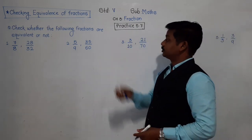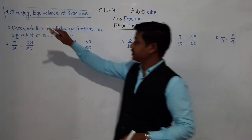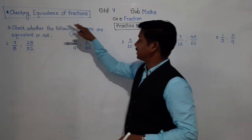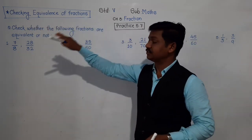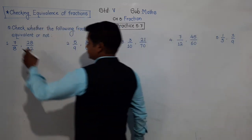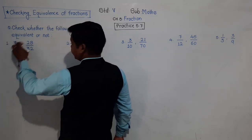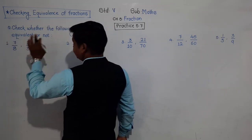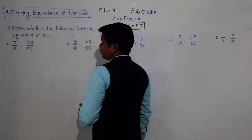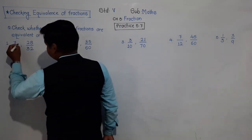Practice 5.7: check whether the following fractions are equivalent or not. See the first example: 7 upon 8 and 28 upon 32. Do the cross product in this way.